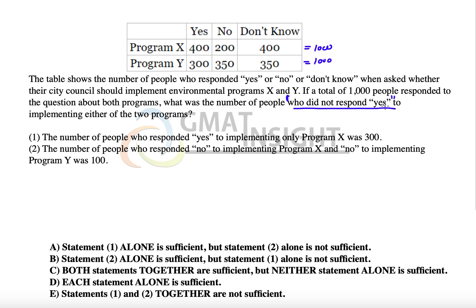We can answer this question if, out of the total members, we could subtract all those who said yes for at least one of the two programs. We need the union of all the people who said yes.